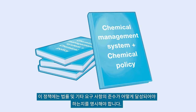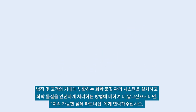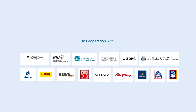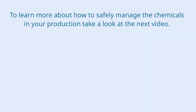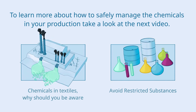The policy should also specify how compliance with legal and other requirements is to be achieved. For further guidance and training on how to set up a chemical management system and safely handle chemicals in line with legal and customer expectations, contact the Partnership for Sustainable Textiles.